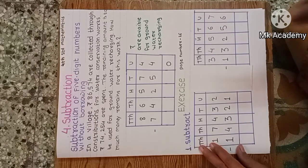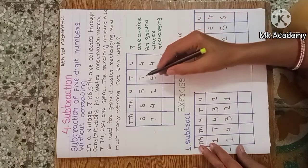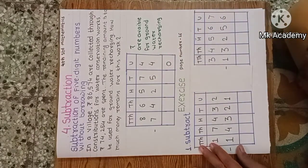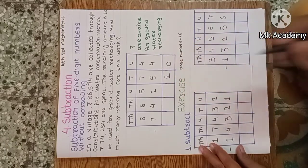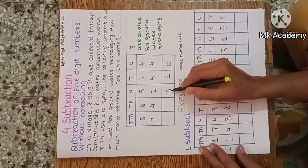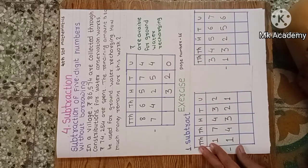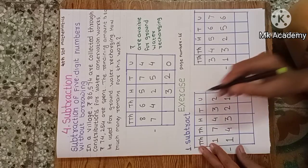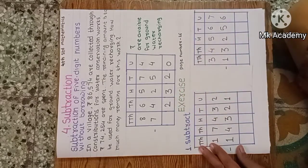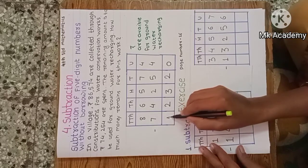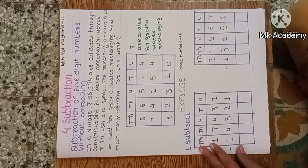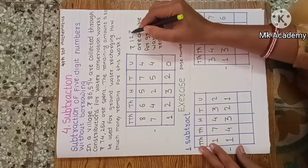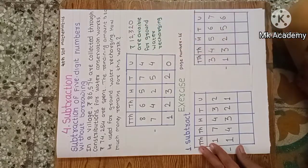Now subtract: seven tens minus five tens — two tens remaining. Five hundreds minus two hundreds — three hundreds remaining. Six thousands minus four thousands — two thousands remaining. Eight ten-thousands minus seven ten-thousands — one ten-thousand remaining. The answer is twelve thousand three hundred and twenty rupees, which are available for groundwater recharging.